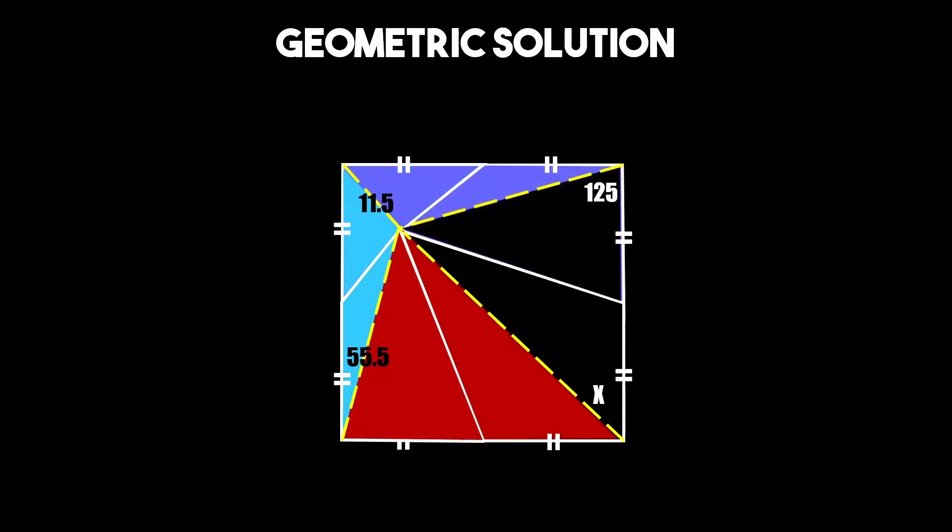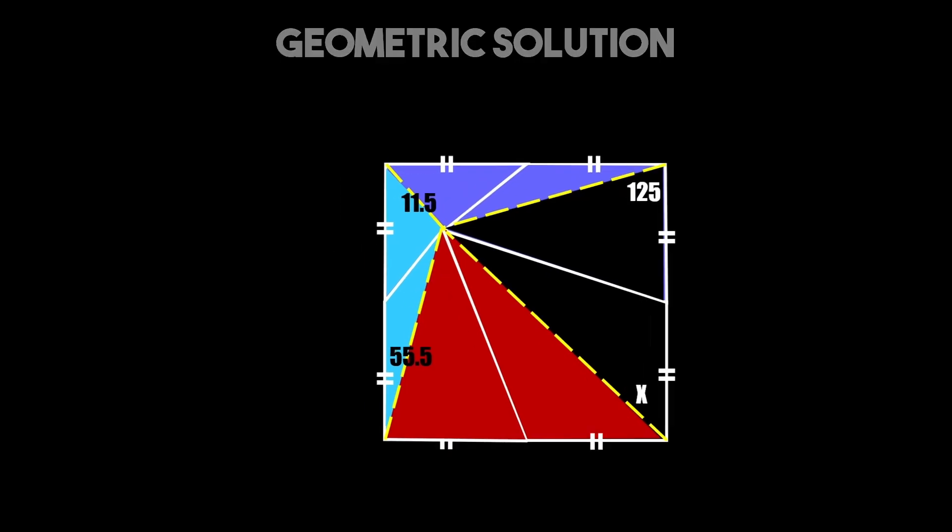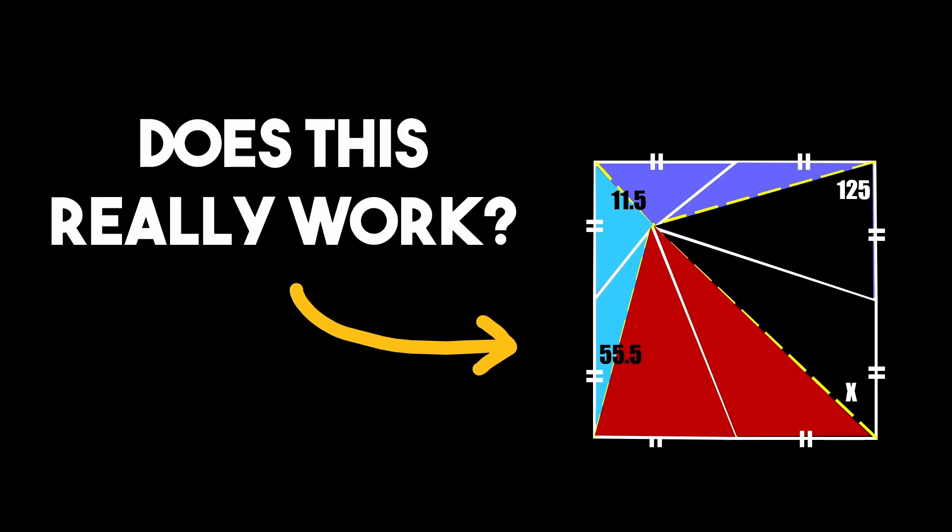And what this creates is four sets of triangles that have identical areas because they have the same base and the same height. Now if you're like me when I first saw this solution you might be skeptical that this actually creates triangles with identical areas.